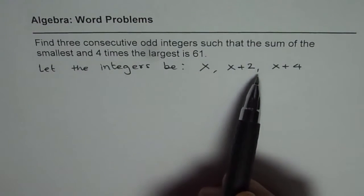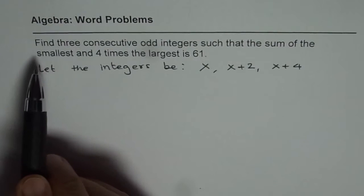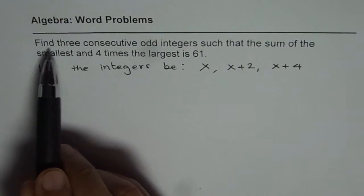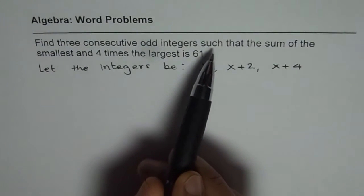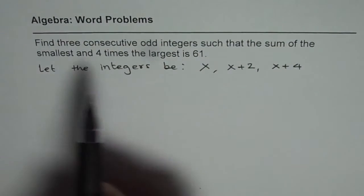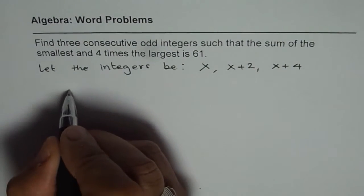So that is how you need to define and then solve the question after writing the equation. Read the question once again: find three consecutive odd integers such that the sum of the smallest - that means the smallest is x -